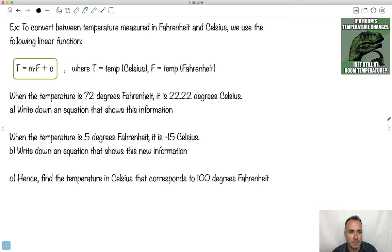So let me give you an example. What if we want to convert between temperature measured in Fahrenheit and Celsius, and we're going to use this linear function. I made this meme right here, I thought it was funny. If a room's temperature changes, is it still at room temperature? So let's look at this. This is a linear function defined as T equals m times F plus c, where T is the temperature in Celsius, and F is the temperature in Fahrenheit. It's another scale that people use. Especially in the U.S., they like to use that one, and most of the rest of the world uses Celsius.